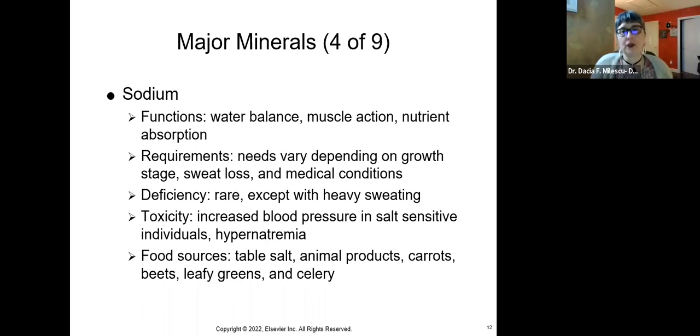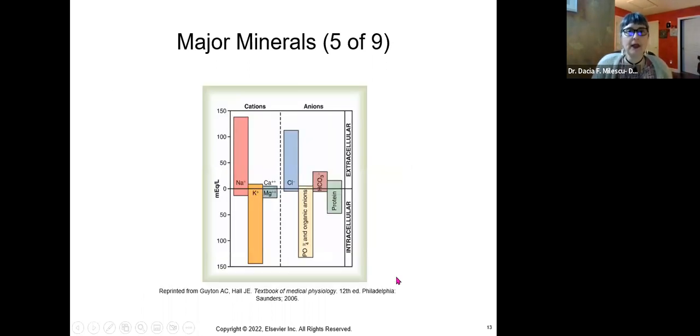You're going to retain more water, which is going to increase blood volume, which therefore is going to increase blood pressure. If you have cardiac issues, you really don't want to put stress on the heart, so you really want to lose blood volume to lower the blood pressure. Too much salt can increase the blood pressure, and that's called hypernatremia. And where you get salt, obviously, table salt, putting it in your food, animal products, carrots, beets, leafy greens, and celery.